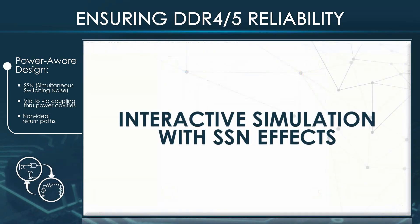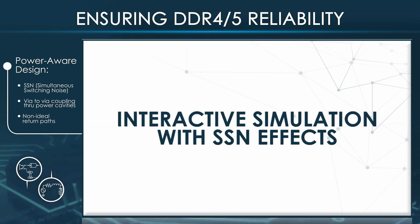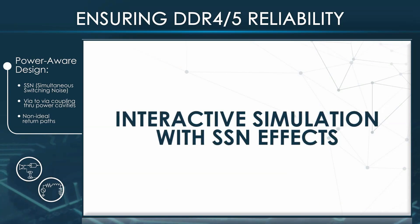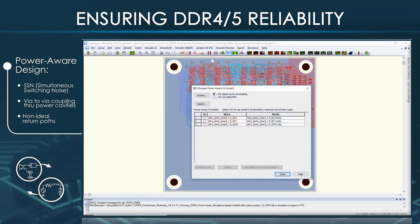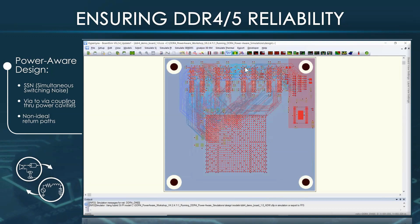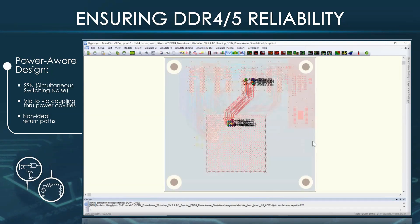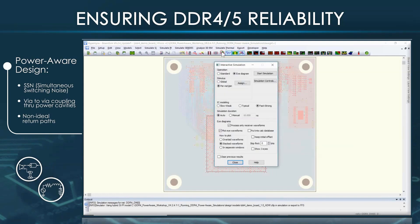Now let's look at how to interactively simulate with SSN effects on some DDR4 nets. Choose Analyze > 3DEM > Manage Power-Aware SI Models and enable the Z-Parameter model at the power pins, then enable the Power-Aware FX button. Here I have nets from 1-byte lane selected. Let's simulate a write cycle and observe the power rail at the controller and the eye of a data net at the DRAM.